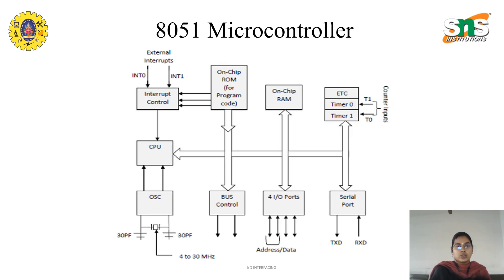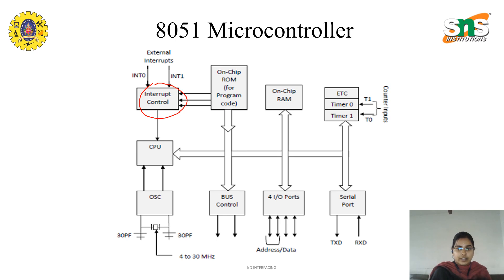Next, we are going to discuss about the 8051 architecture. The first thing we have is interrupt control. As we know, in 8085 and 8086 we have many interrupts like vector, non-vector, maskable, non-maskable, hardware, and software interrupts. Here in the 8051, we have interrupt control classified as external interrupts, timer interrupts, and serial interrupts. There are two pins for interrupt 0 and interrupt 1, which are externally given interrupt pins.